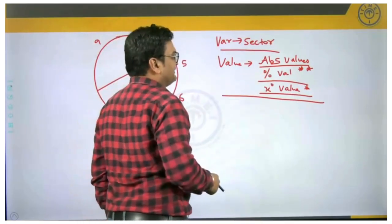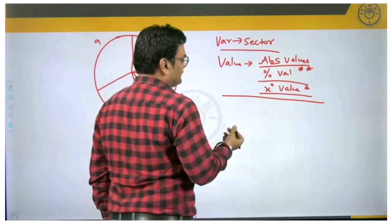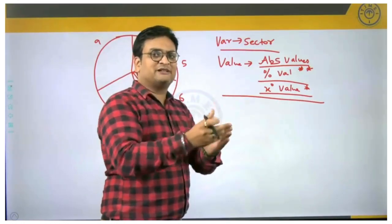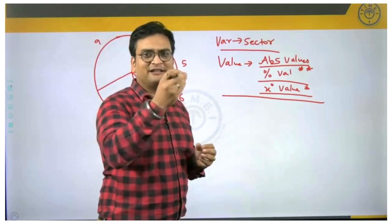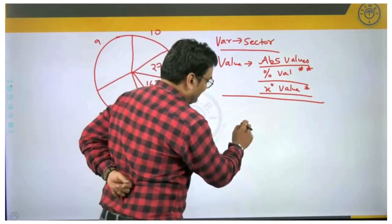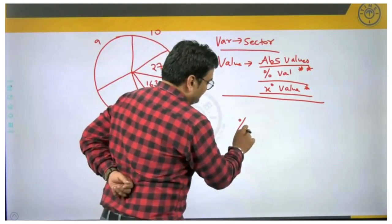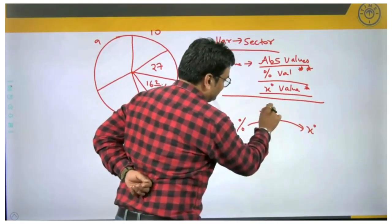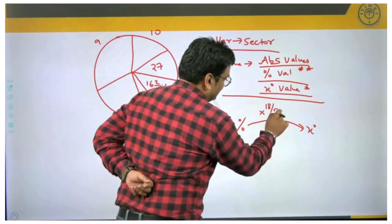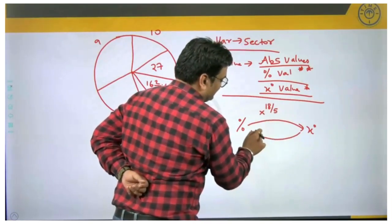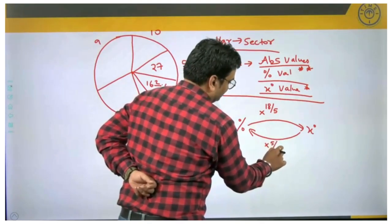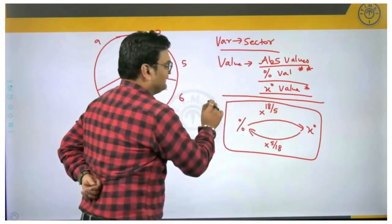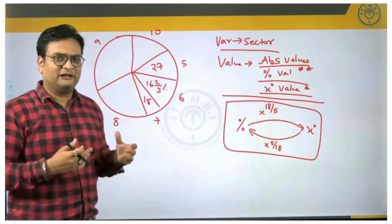We will be dealing with percentages and degrees majorly. Sometimes there will be a requirement of converting one type of value to the other — for example, percentage to degree or degree to percentage. The conversion factor is: to convert percentage into degree, multiply by 18/5, and for the reverse conversion, multiply by 5/18.